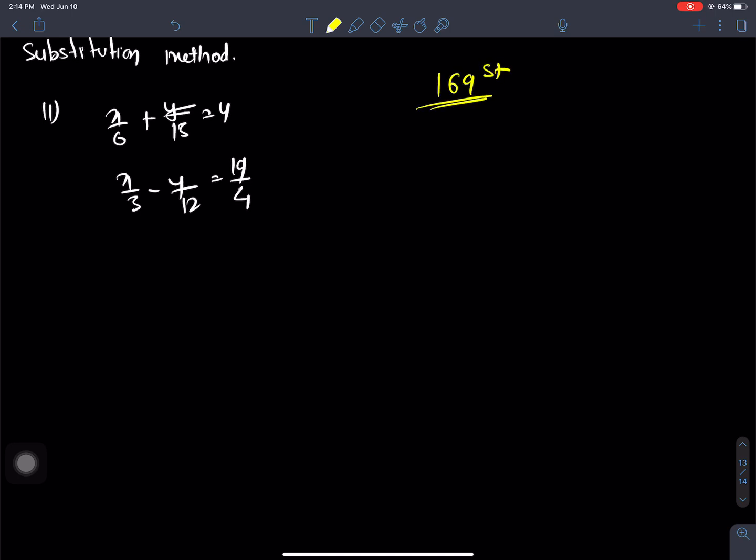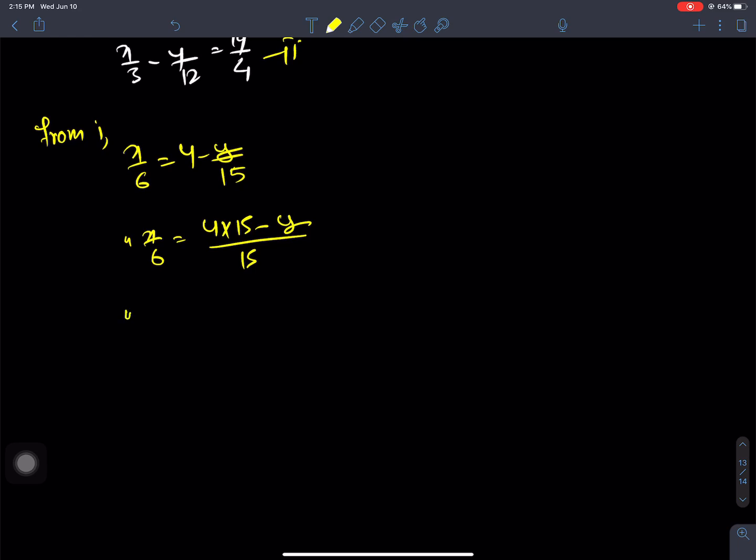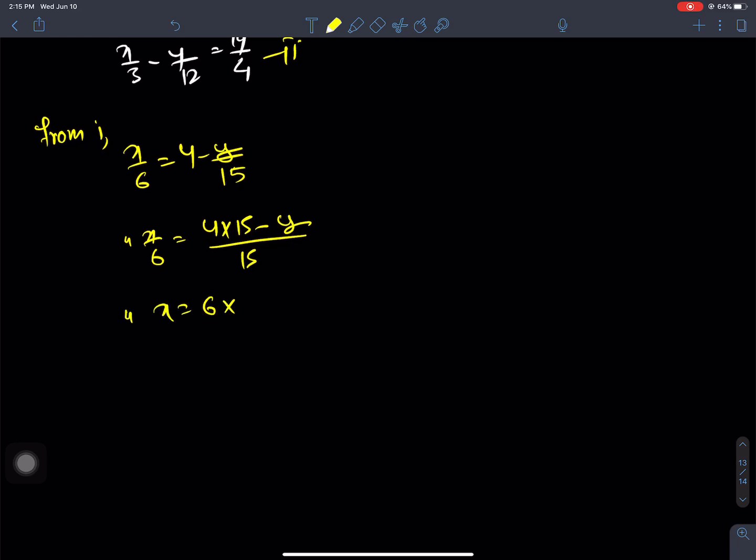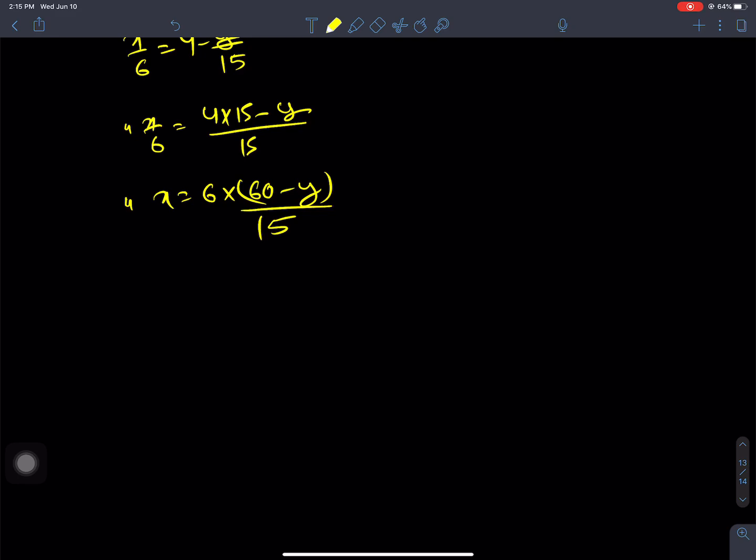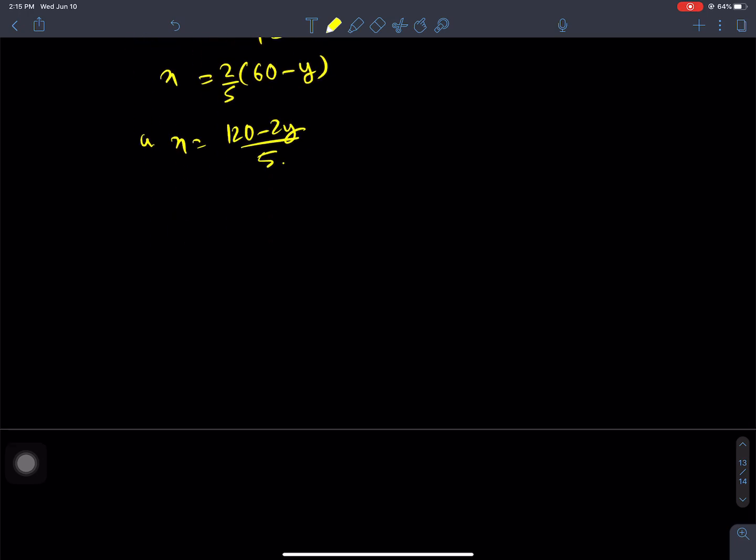From equation I, x/6 = 4 - y/15. So x/6 = (4×15 - y)/15 = (60 - y)/15. Therefore x = 6(60 - y)/15 = 2(60 - y)/5. So x = (120 - 2y)/5.